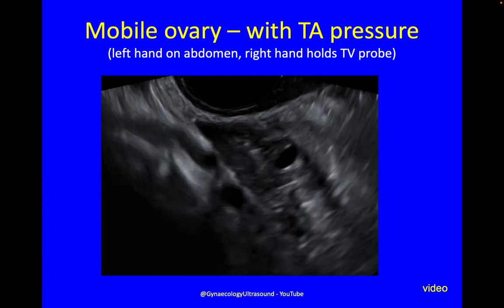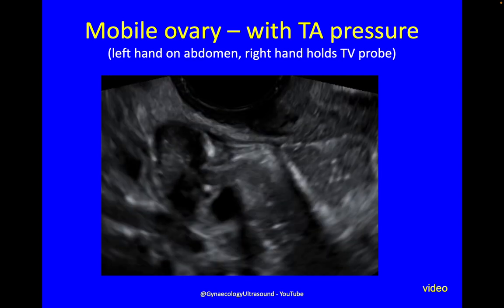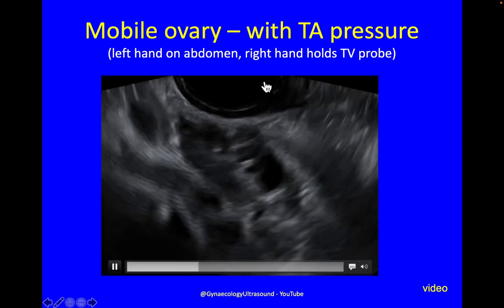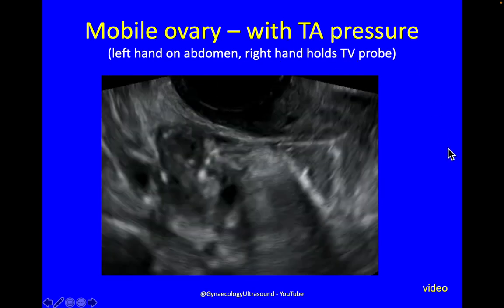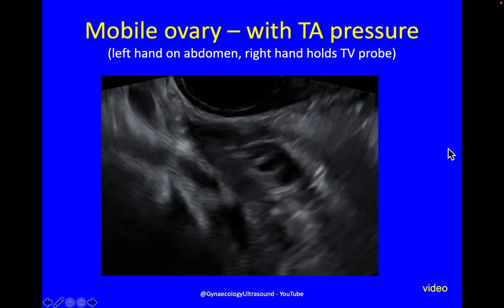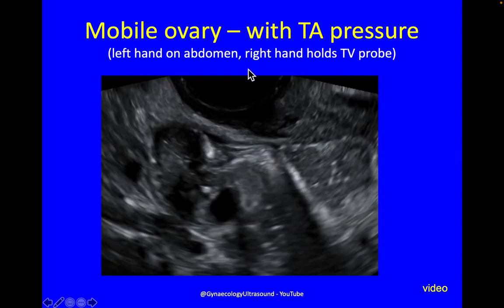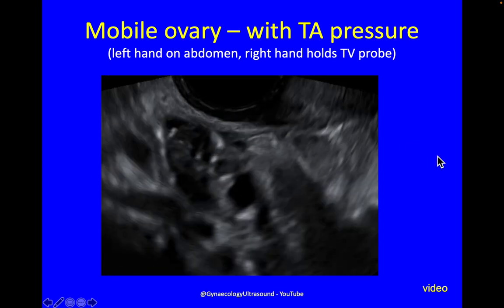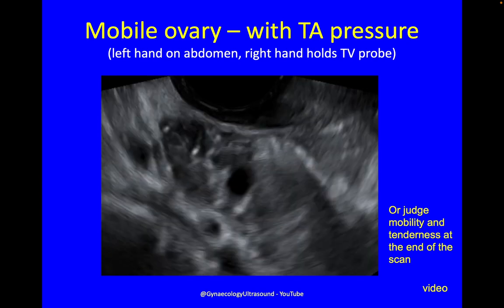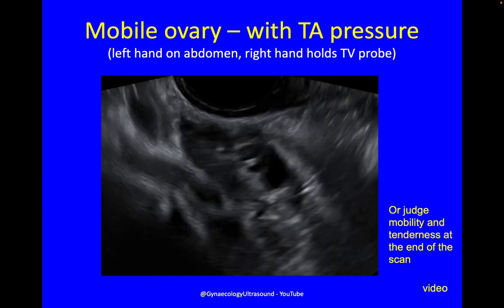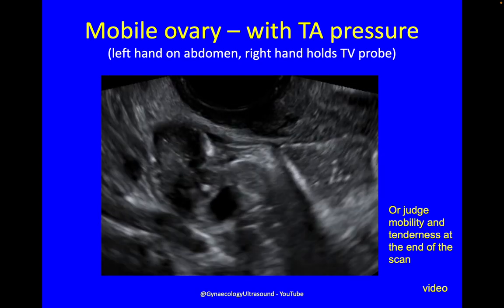Either now or at the end — I tend to do it at the end — you judge ovarian mobility. The easiest way is with your probe: just press very, very gently, and usually patients don't even notice you doing it. If there is a lot of bowel in the way, you might place your left hand on the abdomen, telling them you're going to do this, press gently, and then ballot with your TV probe. I usually do this at the end of the scan so I can go around the whole pelvis judging mobility and tenderness one bit at a time, once I already know the anatomy.